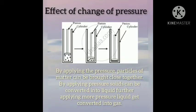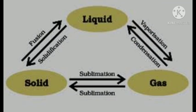Effect of change of pressure. When we apply pressure and compress a gas in a closed cylinder, by applying pressure the particles of matter can be brought close together. By applying pressure, solids can be converted into liquid. Further, applying more pressure, liquids get converted into a gaseous state. Here is an image of the interconversion of three states of matter. Look at the picture — how solids, liquids and gases are interconnected with each other.